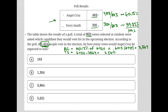The question asks by how many votes Angel Cruz would be expected to win. That's the difference between their expected vote totals: 3864 minus 2560 equals 1,304. Therefore, the answer is choice B.